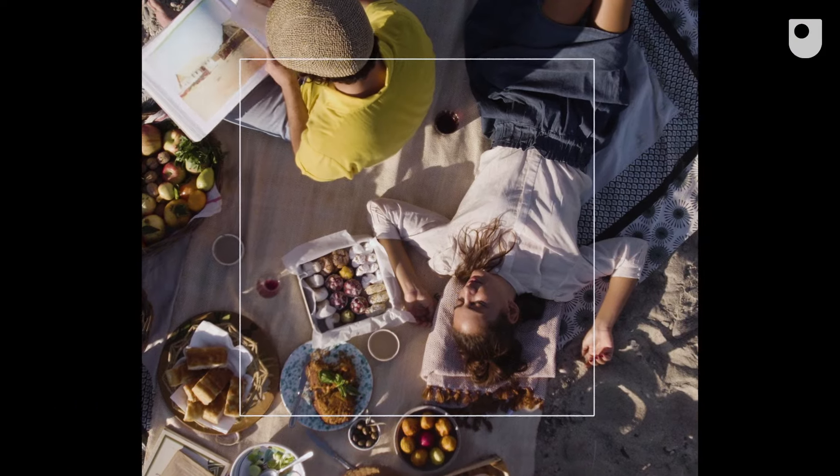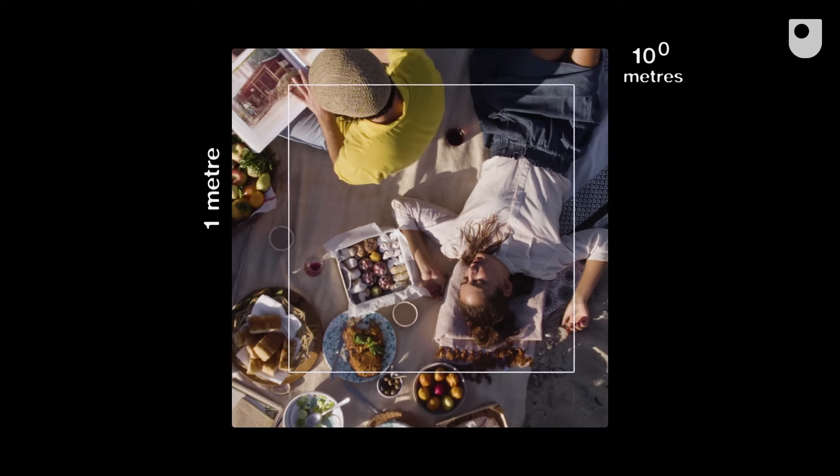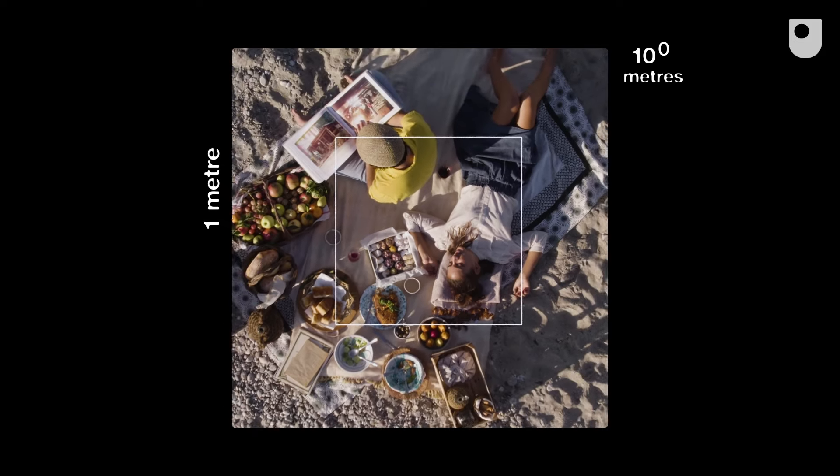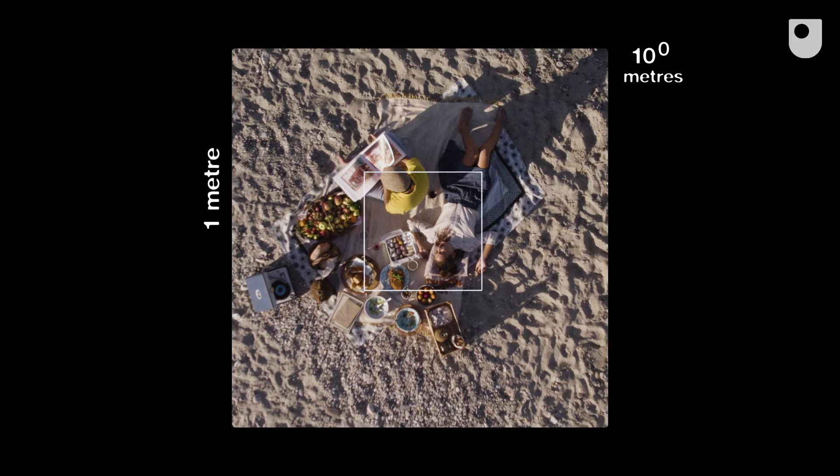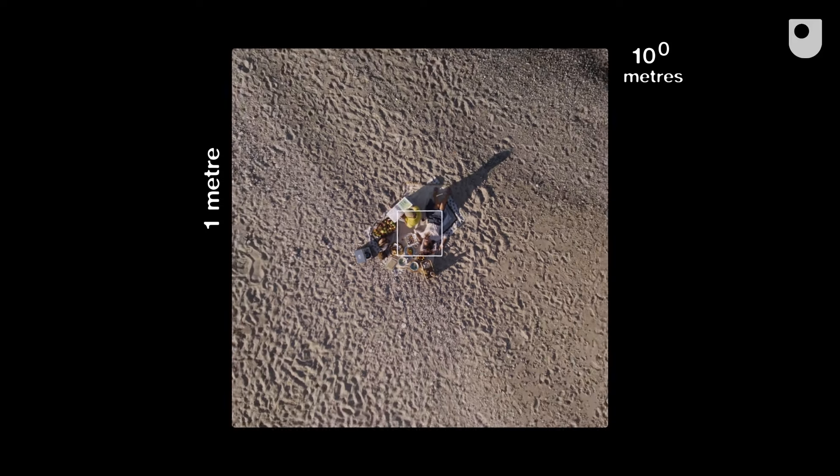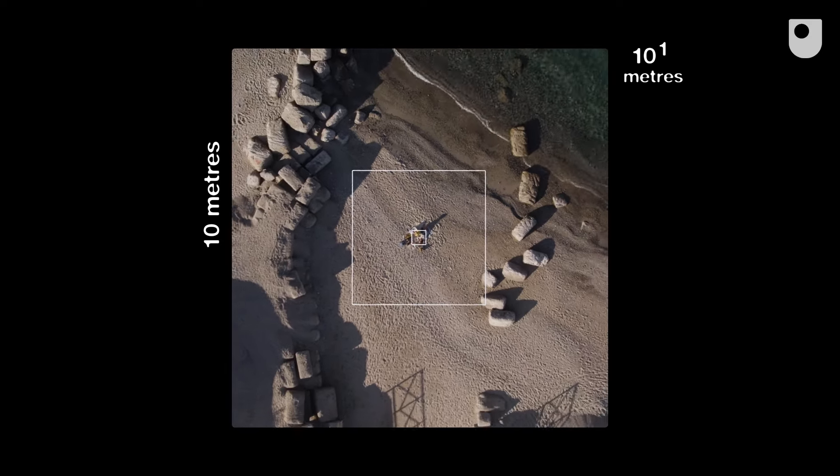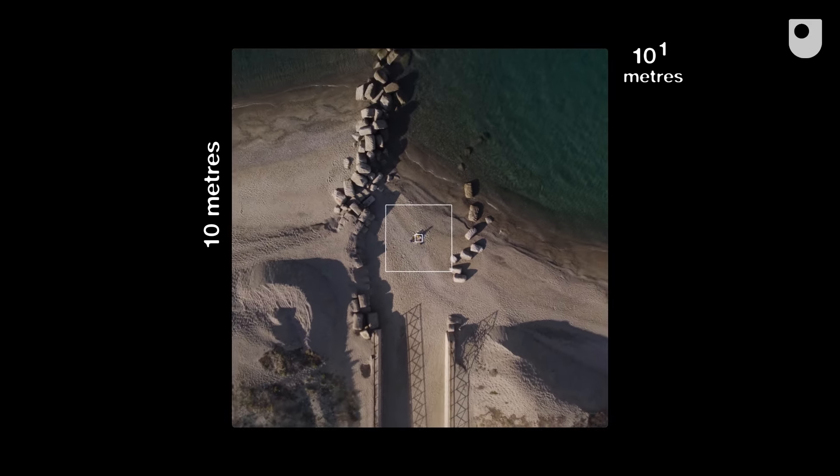We'll start with a scene one metre wide, viewed from one metre away, and every ten seconds we're going to move out to ten times further away, so the scene will be ten times wider. This square is ten metres wide, and in ten seconds the next square will be ten times that. The movement may seem linear, but we're actually accelerating exponentially into the distance.